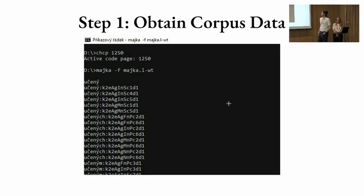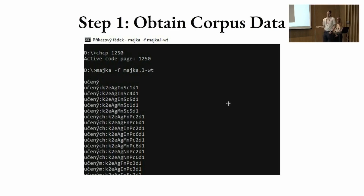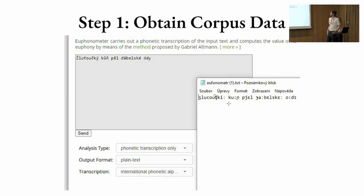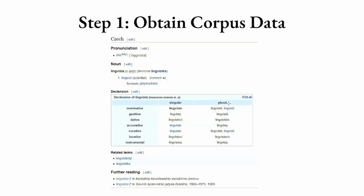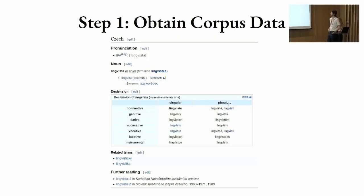MICA is a command line tool. You give it a word like 'Učení' here and you get a bunch of tags — the Brno format tags — for cases and other grammatical information. The Euphonometer gives you the IPA transcription of whatever you put there for Czech, which is very useful. And you know how Wiktionary looks like.